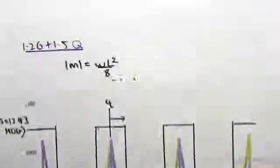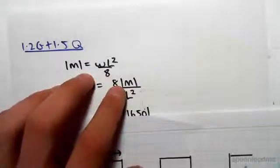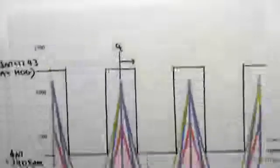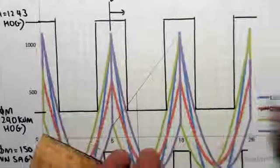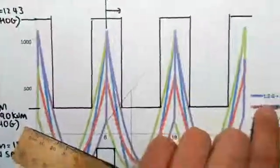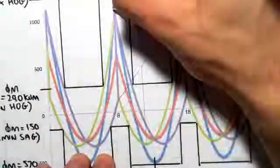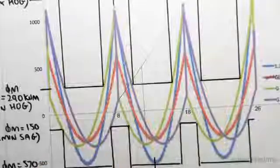So we need to know M, the distance, the total moment from the maximum sagging moment all the way connected to M1 and M2. So M1 and M2, 1.2G and 1.5Q is the blue line, the blue parabola. So there's M1 and there's M2 for the blue parabola.